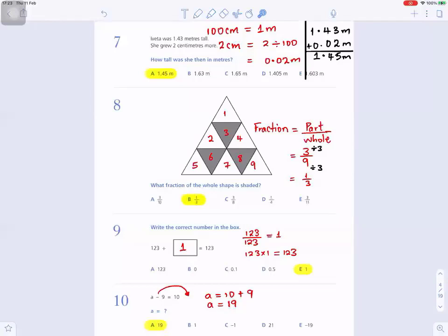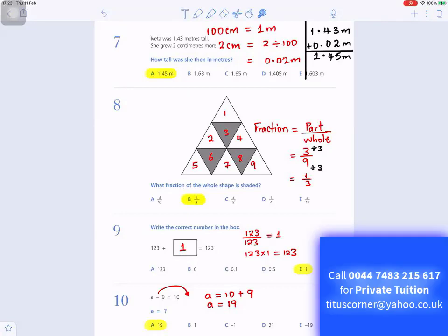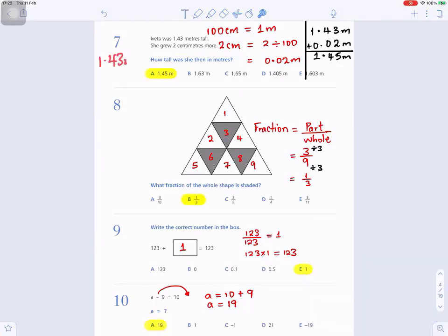Question number 7: Ivita was 1.43 meters tall. She grew 2 centimeters more. How tall was she then in meters? So we have to change everything to meters. We already have 1.43 in meters. We need to change 2 centimeters to meters before we add them. So you need to remember this fact: 100 centimeters equals 1 meter. To change from centimeters to meters, you divide by 100.